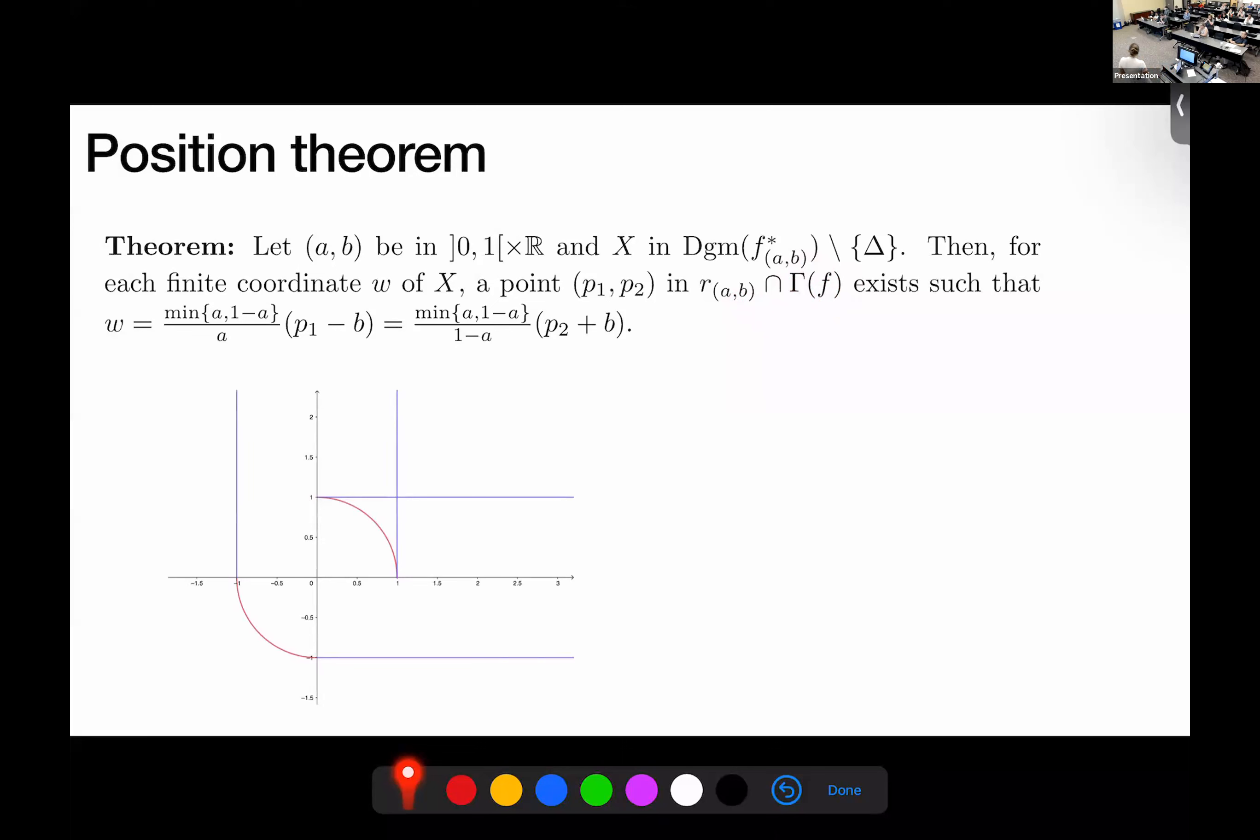So consider the extended pareto grid that we've seen before and consider this filtering line. Now, when we filter the manifold along this line, we first see the first feature at this orange dot here, meaning that this is the first point where we, if we take the pre-image under the function, we see the first connected component of the sphere. And this, in fact, corresponds to the first coordinate of the zero persistence diagram of the function at that parameter value a, b. Same thing for this blue point here, you have to imagine that you have walked along this line long enough so that if you take whatever you see down and on the left of this point, if you take the pre-image, it's going to be the entire sphere.